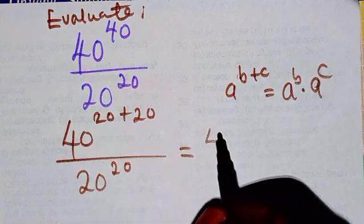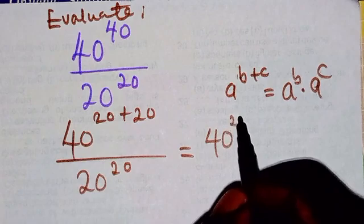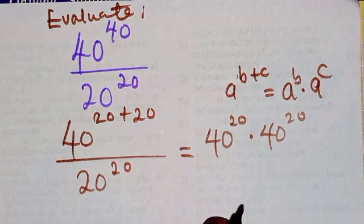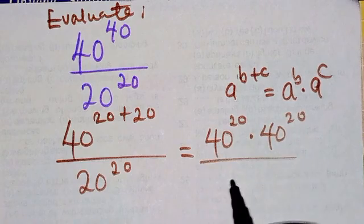So it shows that 40 to power 20 multiplied by 40 to power 20, then divided by 20 to power 20.